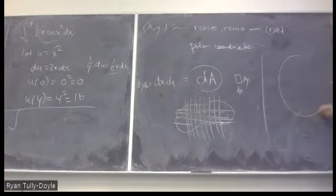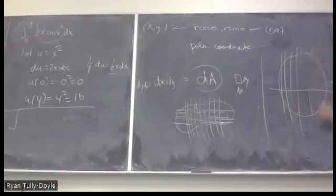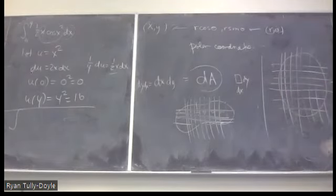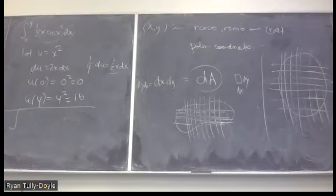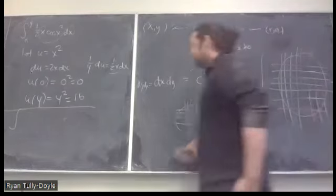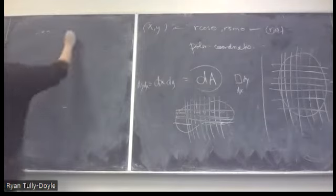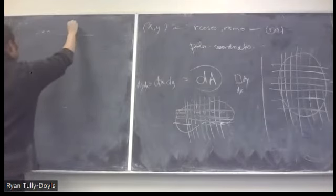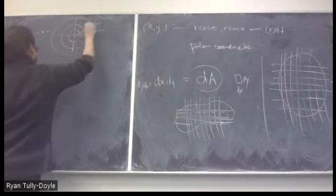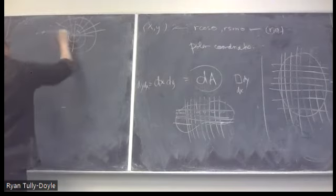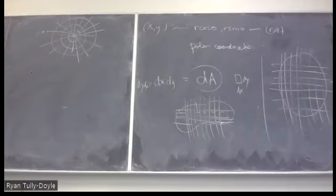Somebody comes along and says: suppose you have a circle. This is a kind of crappy way to cut a circle up — we're not taking advantage of the fact it's a circle. Maybe instead of Cartesian coordinates, I should cut it up into more appropriate coordinates. The polar coordinate system works like this: you have radial circles and angles. A point is located by a radius, telling you how far from the origin, and an angle, telling you how far you've rotated from the positive x-axis.